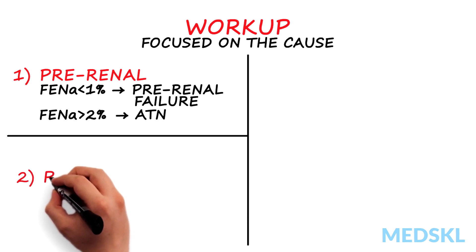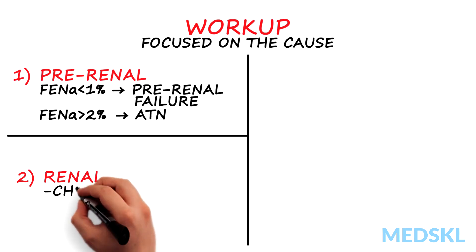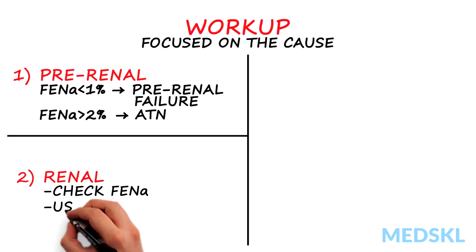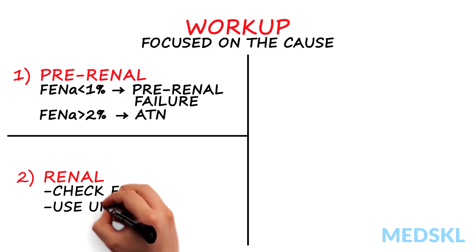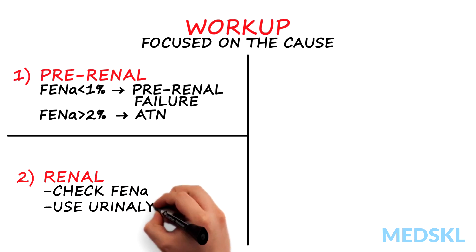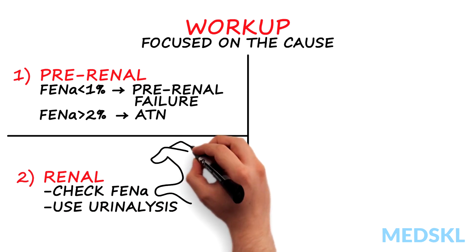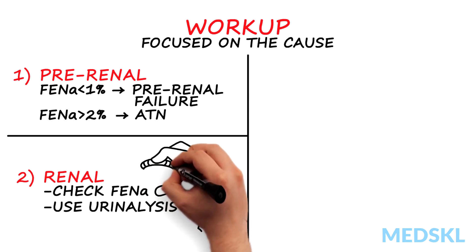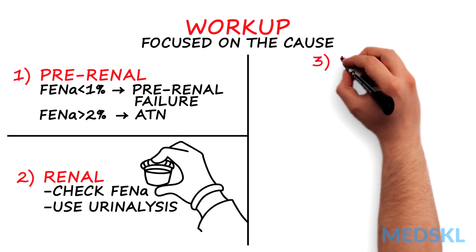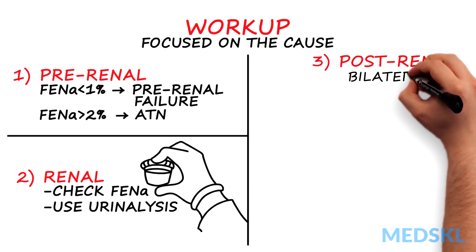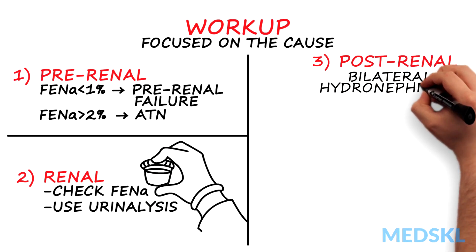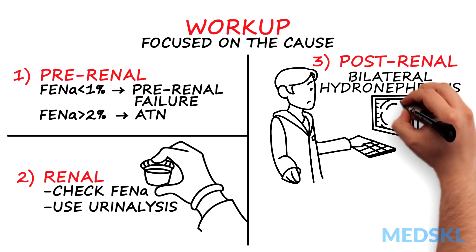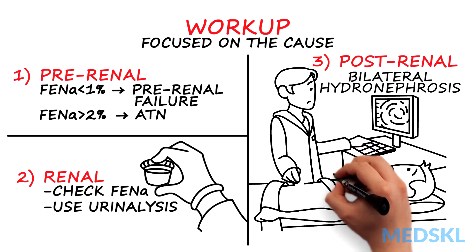2. Renal: for oliguric ATN, check fractional excretion of sodium as stated. Don't forget the possibility of RPGN or AIN, and use the urinalysis to help diagnose these. 3. Post-renal: the finding of bilateral hydronephrosis on ultrasound is highly predictive of post-renal acute renal failure.